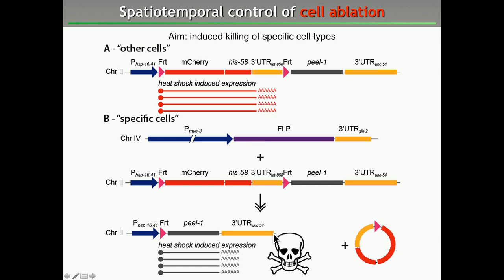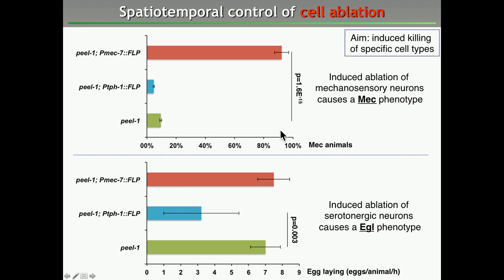To illustrate that this works, we induced expression of PEEL-1 specifically in mechanosensory neurons using the mec-7 promoter, which gives a high frequency of mechanosensory-defective animals. In contrast, expressing the flipase under the control of a promoter active in serotonergic neurons gives an egg-laying defect.